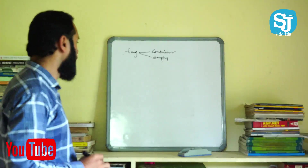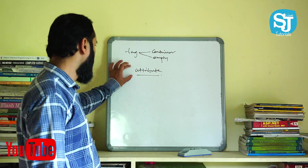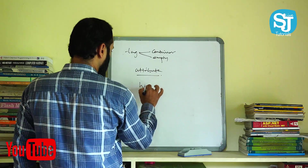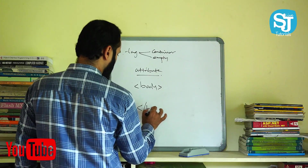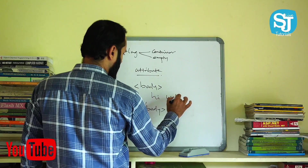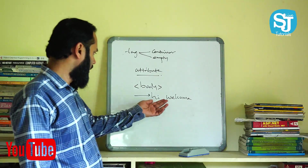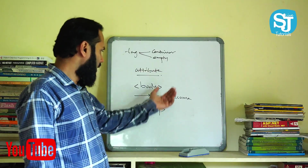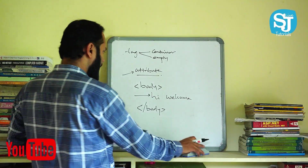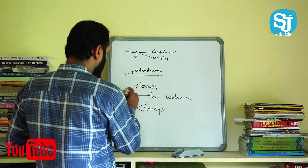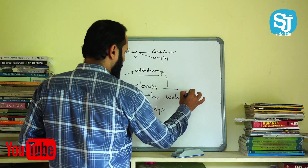This is the first new concept in HTML — Attribute, also called properties. For example, if we call the body tag and give a message like Hi, Welcome. You can change different things — one example, you can change the color, you can change the background. To do these things, you can use attributes. We have to add it to the attribute in the body. This means it is within the opening tag — you add attribute name, equal to, and its value.